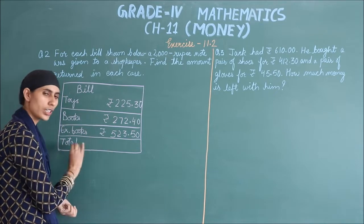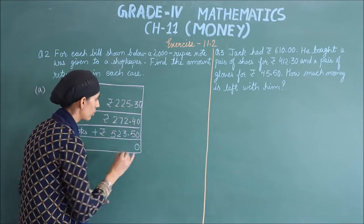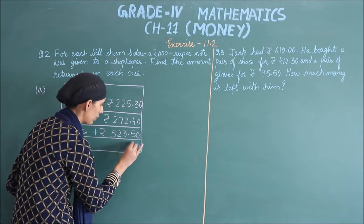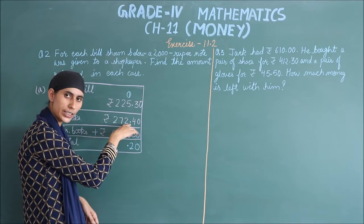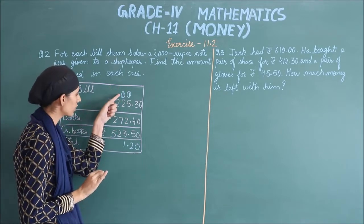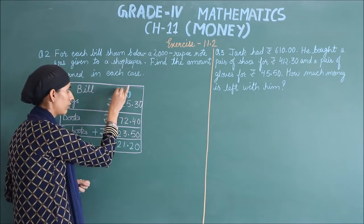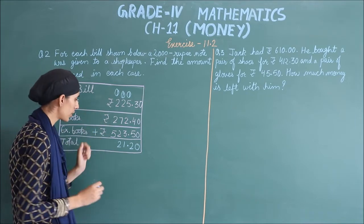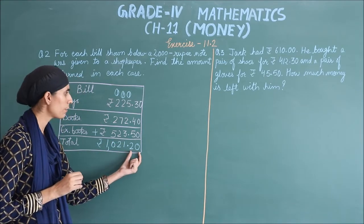Your bill is already created. We need to find the total. We will simply add them up: 0 plus 0 is 0; 3 plus 4 is 7, 7 plus 5 is 12 — write 2, carry 1; 5 plus 1 is 6, 6 plus 2 is 8, 8 plus 3 is 11 — carry 1; 2 plus 1 is 3, 3 plus 7 is 10, 10 plus 2 is 12 — carry 1; 2 plus 1 is 3, 3 plus 2 is 5, 5 plus 5 is 10. So the bill total is ₹1,021.20.